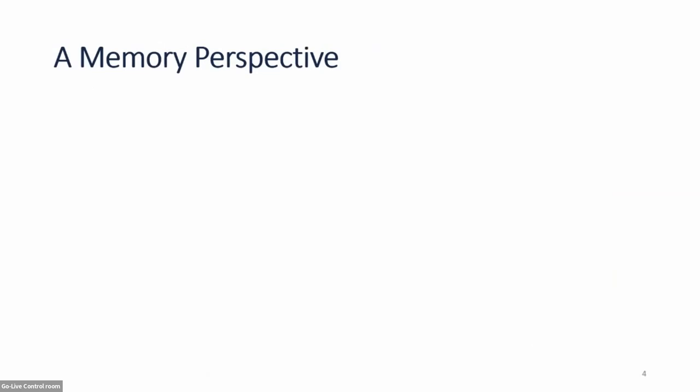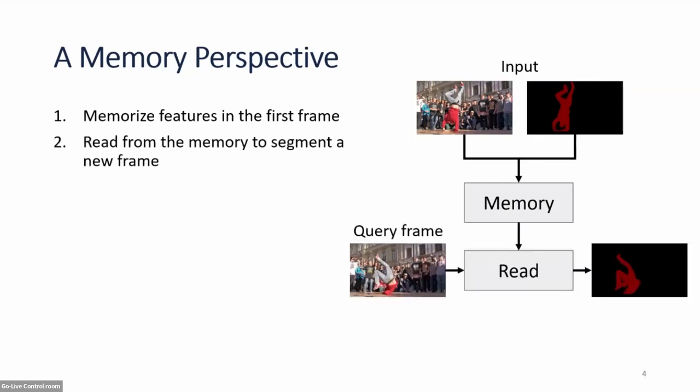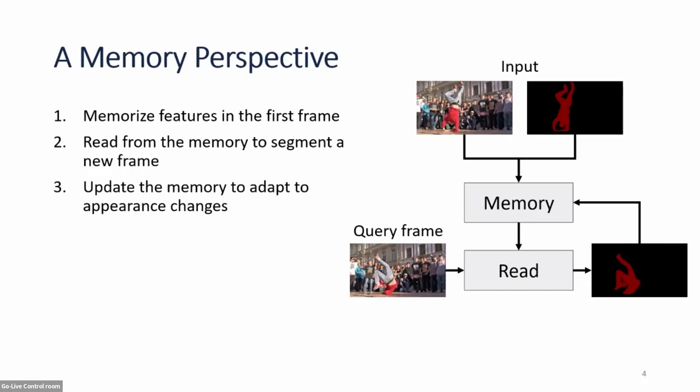Looking at video object segmentation from a memory perspective: any method must memorize features from the first frame — the input image and mask — computing some representation and storing it in memory. Then, for a new query frame, we read from this memory to get features and segment the new frame. Optionally, we update our memory representation with this mask in order to adapt to appearance changes in the video.